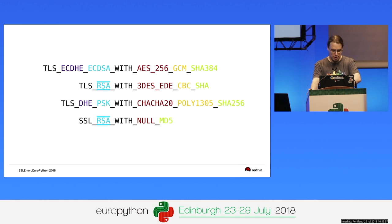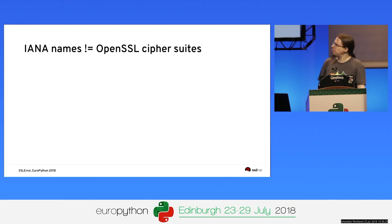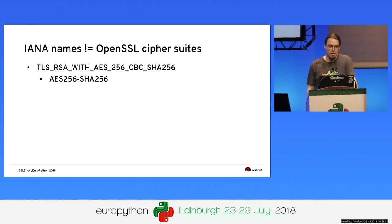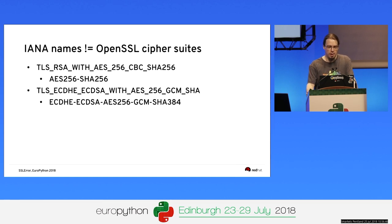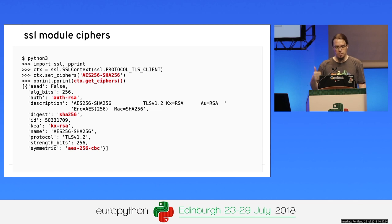The first cipher suite is an elliptic curve Diffie-Hellman key agreement, also using elliptic curves to authenticate the server, AES with Galois Counter Mode as the block cipher, and SHA-384 to verify the connection — that's the official IANA standardized name. But in OpenSSL or Python they look totally different because OpenSSL decided to use its own naming rules. In Python 3.6 you can use the get_ciphers tool to configure a cipher suite and get a list of supported ones.